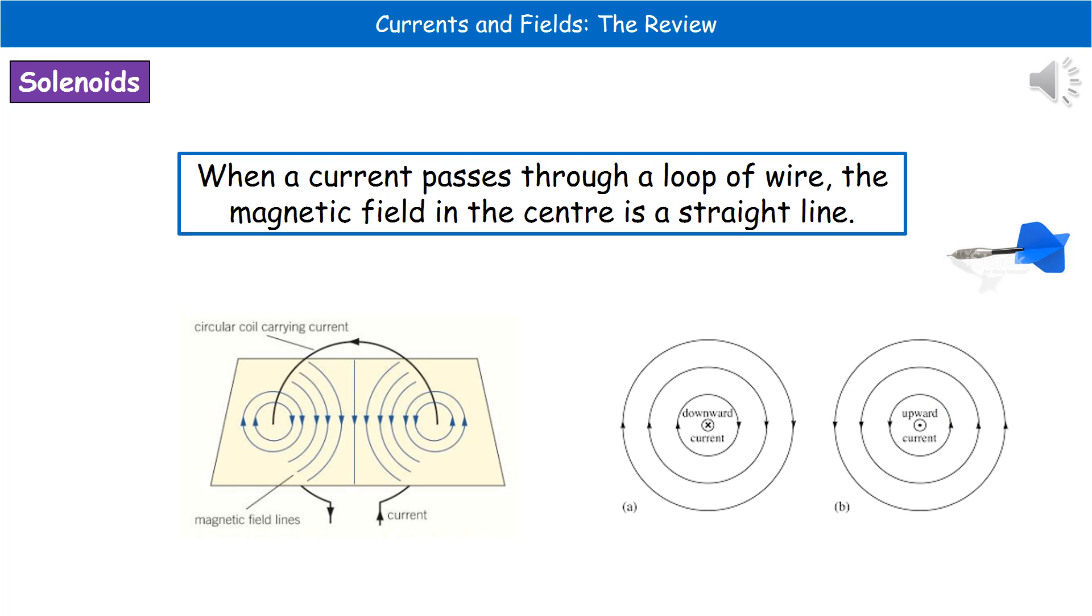The next thing we need to consider is a loop of wire. In the bottom left is a diagram showing a loop of wire passing through a piece of card and the field lines associated with it. If you look in the centre of that loop, you can see we've got a straight line. When you look at where the loop goes through the pieces of paper, you can see we've got those concentric circles again.